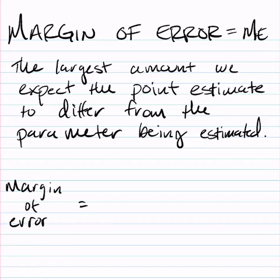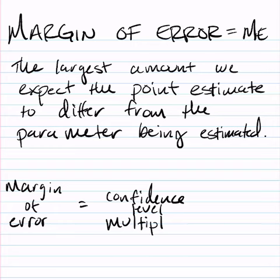Now the margin of error is made up of two parts. It's made up of the confidence level multiplier, which is connected to how confident we want to be in the procedure that we use. So if it's 95 percent, the multiplier will correspond to that.